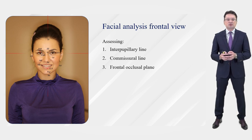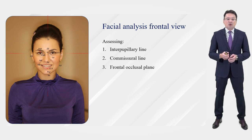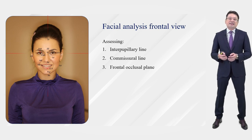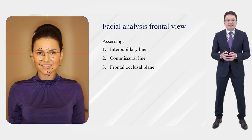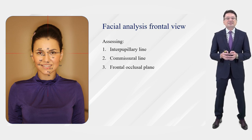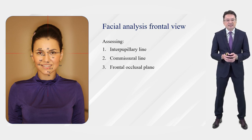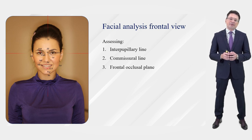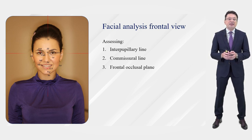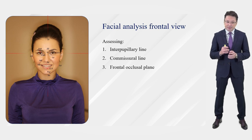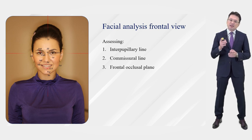The commisural line is a line from the corners of the mouth. The frontal occlusal plane is normally parallel to the interpupillary line. If it is tilted or displaced, it can significantly harm aesthetics and also be a symptom of TMJ dysfunction or MLD — mandibular lateral dislocation.